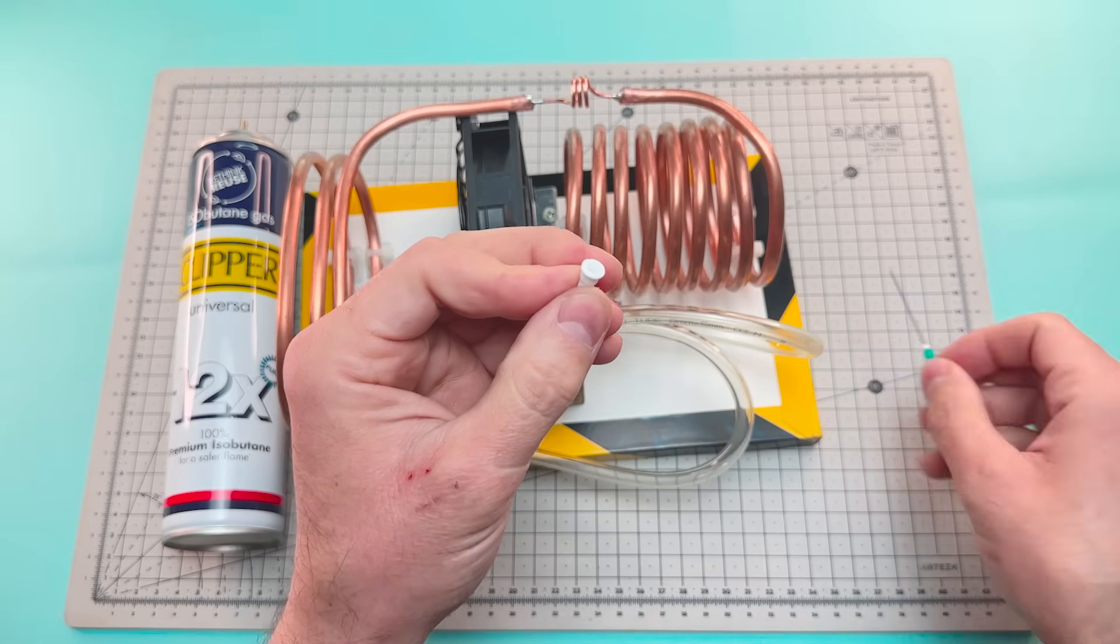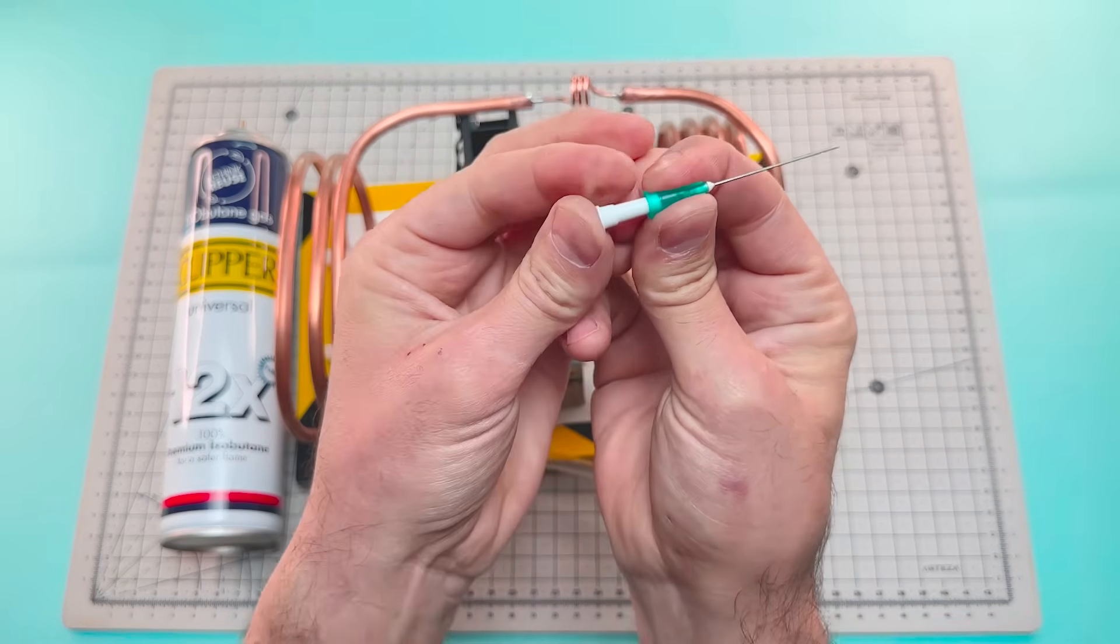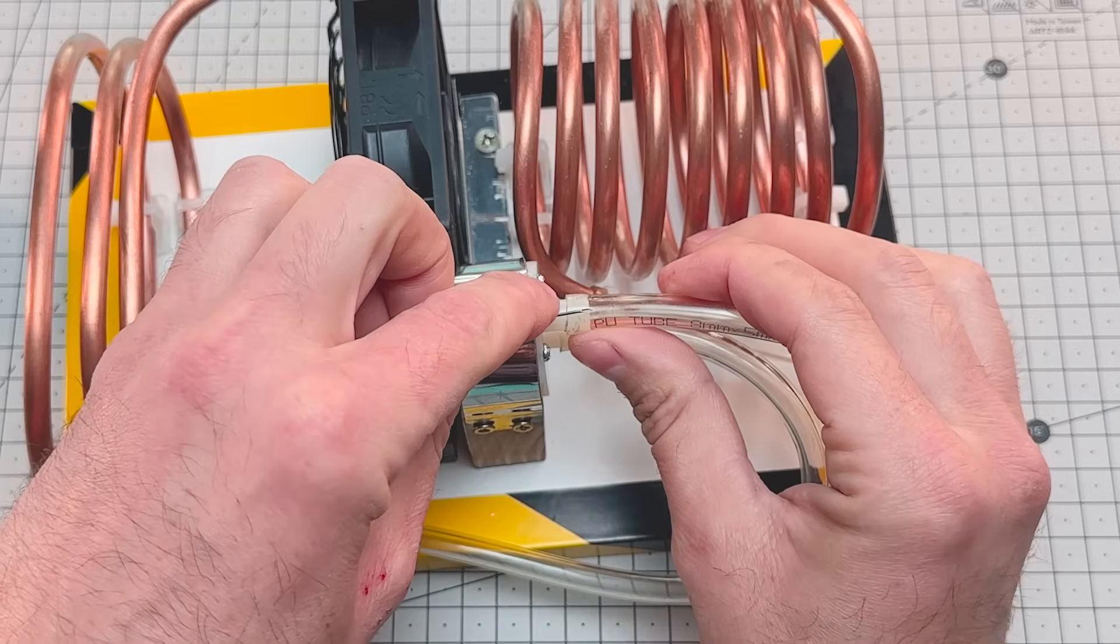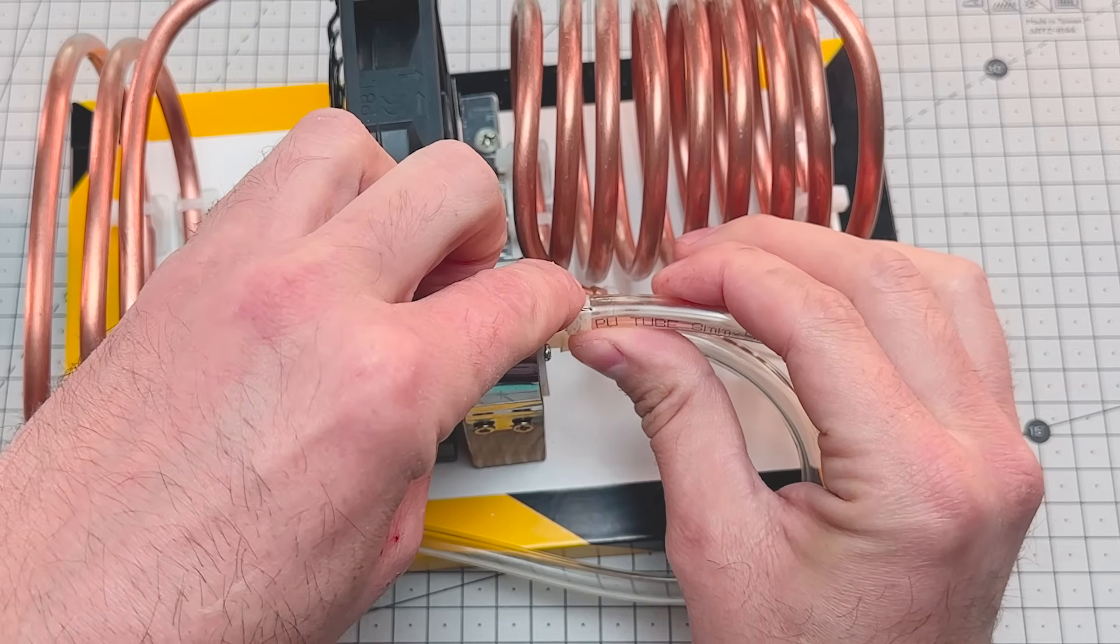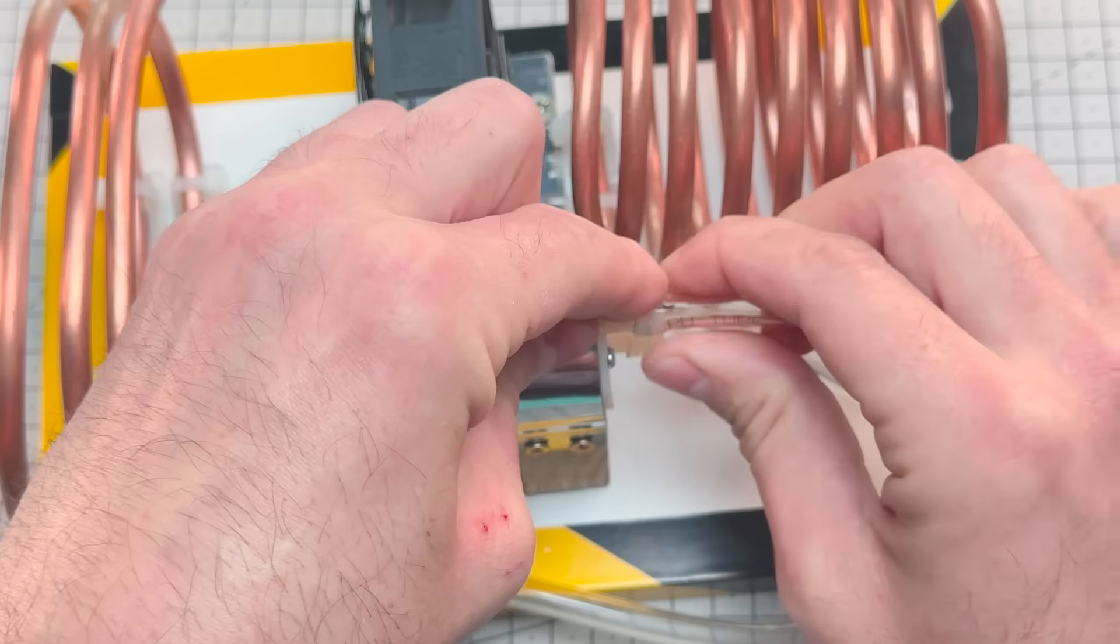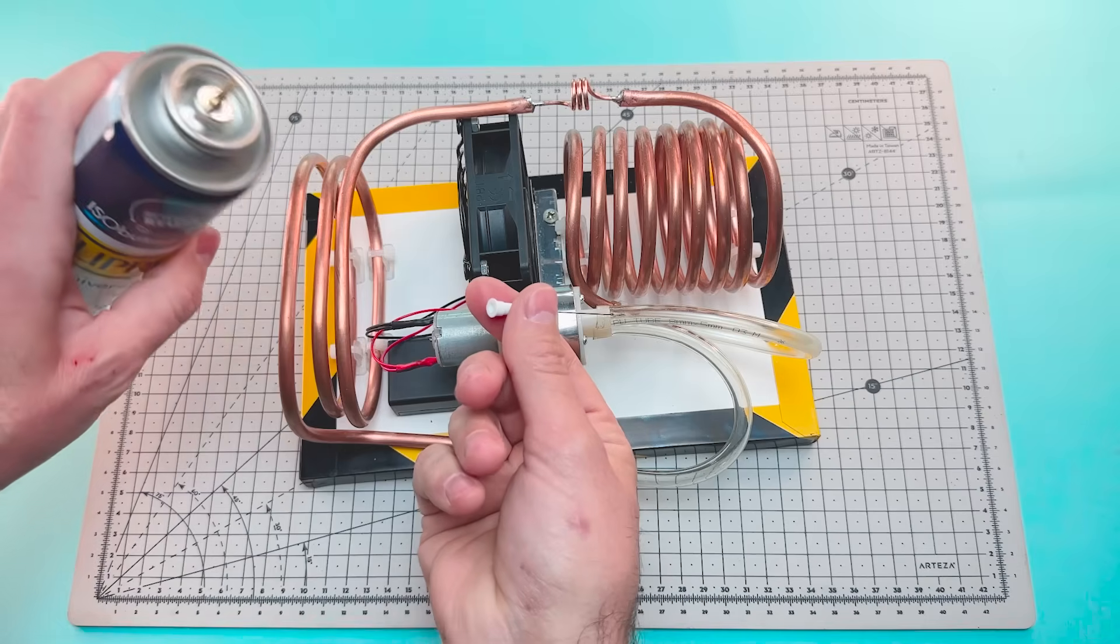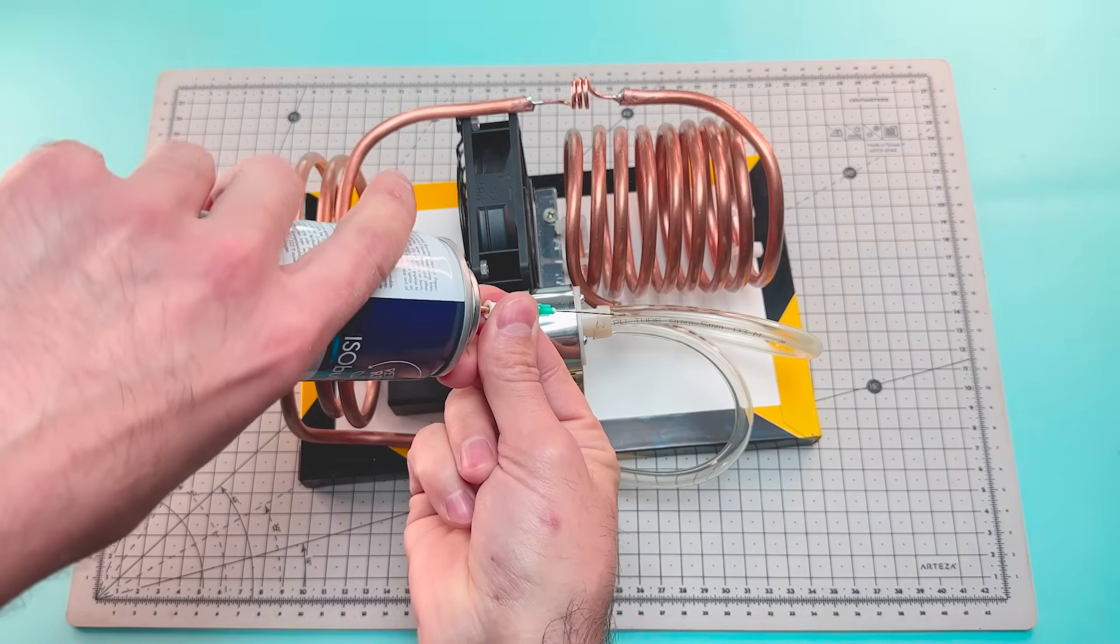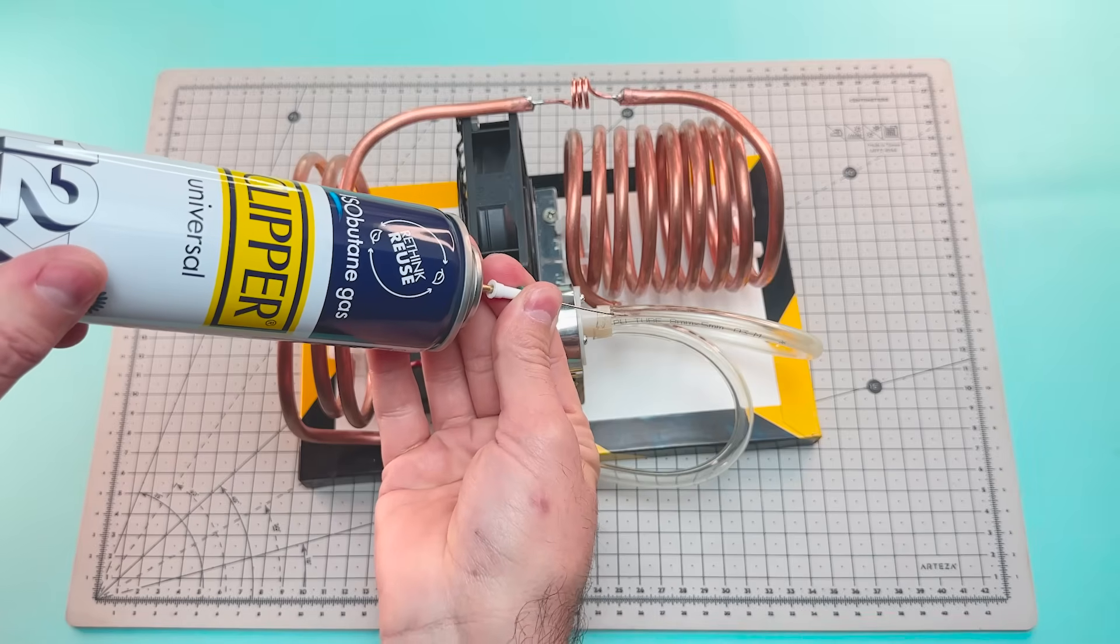And to make the gas evaporate in a controlled way, we circulate it through a capillary tube, a very narrow conduit that causes a sudden pressure drop in the evaporator. As the pressure drops, the isobutane also drops in temperature and evaporates rapidly, cooling the tube through which it passes.